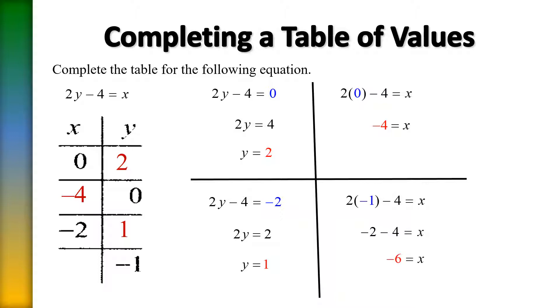So when we plug in a negative 1 for y what we get out for x is a negative 6. And we have just completed a table of values.